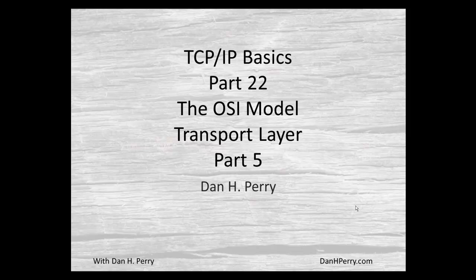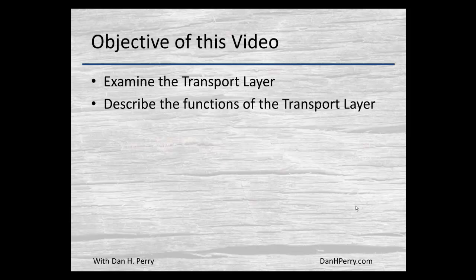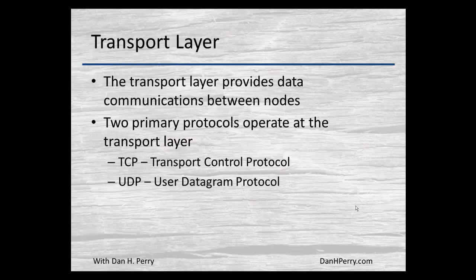Dan Perry here again, and this is our TCP/IP basic series, part 22: the OSI model. In this video we're going to be looking at the transport layer — this is just the first in several tutorials on the transport layer. The transport layer provides data communications between two nodes, endpoints, or computers. There are two primary protocols used at the transport layer: TCP, or Transmission Control Protocol, and UDP, User Datagram Protocol. Both are used extensively, with TCP being the most common.